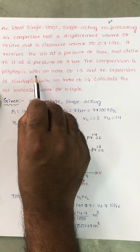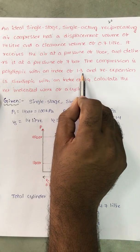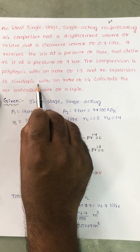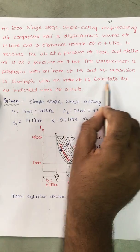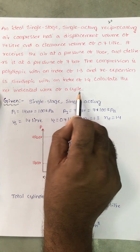The compression is polytropic with an index of 1.3 and re-expansion is isentropic with an index of 1.4. Calculate the net indicated work of a cycle.